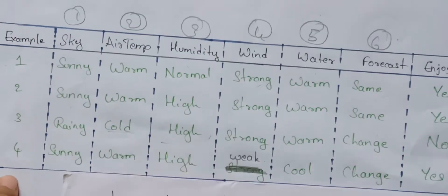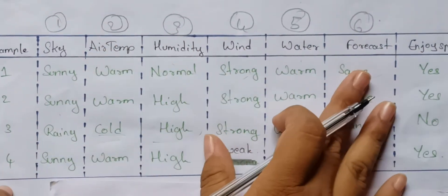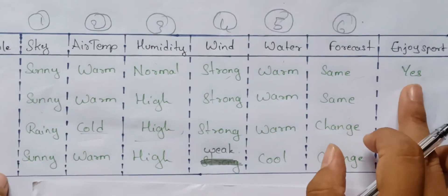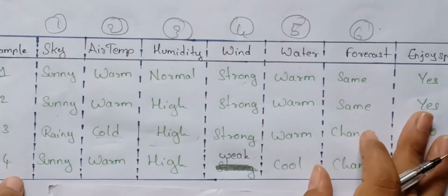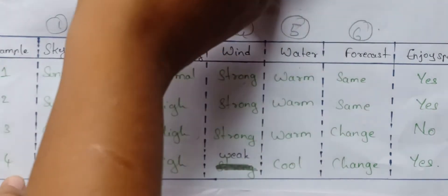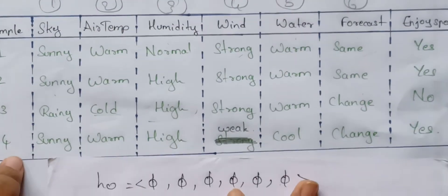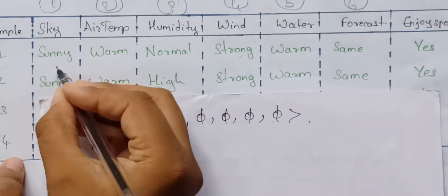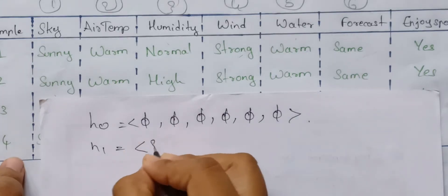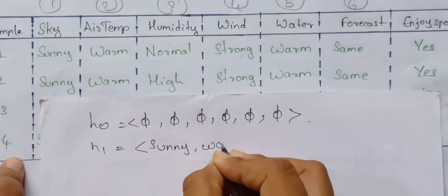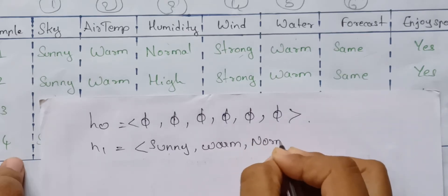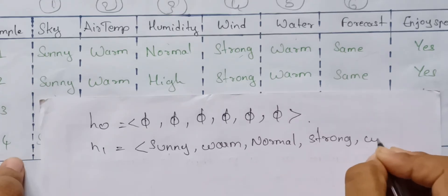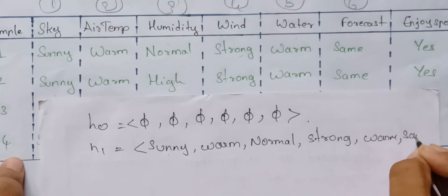H1 is the first example hypothesis. I am going to explain the attributes. For each positive example — if there is a positive example, there is a positive label S. Yes is positive, no is negative. The values are: sunny, warm, normal, strong, warm, same.